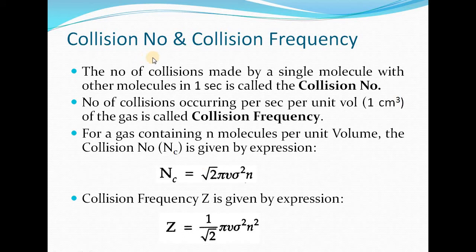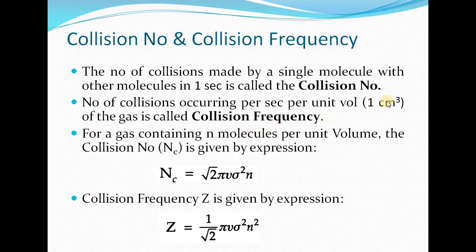Next are the very important concepts of collision number and collision frequency. Collision number is the number of collisions made by a single molecule with other molecules in one second. Collision frequency is the number of collisions occurring per second per unit volume of the gas. So collision frequency involves the additional condition of per unit volume — the total number of collisions taking place in unit volume in one second — whereas collision number refers to collisions by a single molecule in one second.